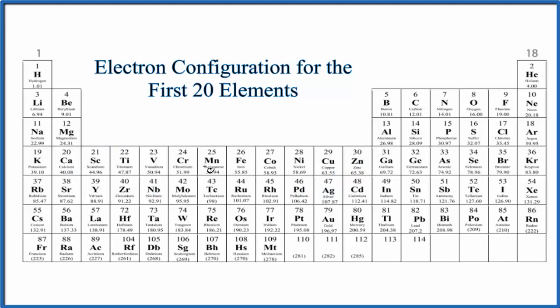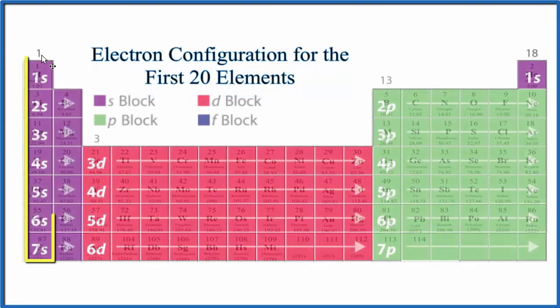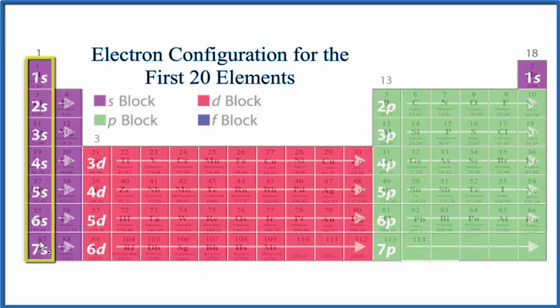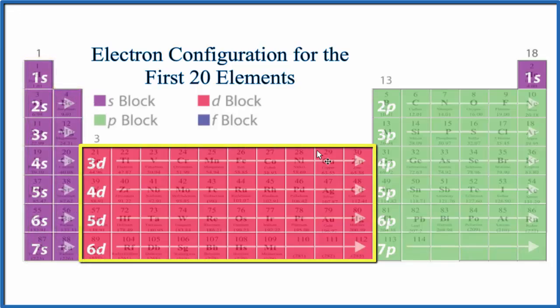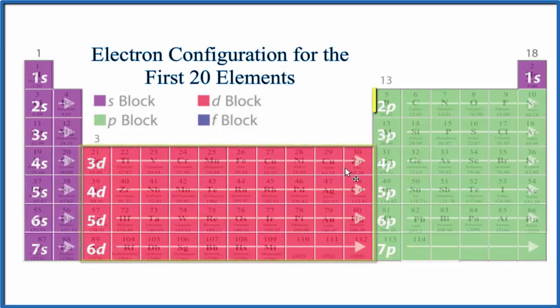So let's take a look at the orbital blocks on the periodic table. That's what's going to give us our pattern. Everything in group 1 ends in s1. Everything in group 2 ends in s2. Then we have our d block, d1 through 10, and we have p1, 2, 3, 4, 5, 6. Down here we'd have our f block, but we're not worried about that right now. So this is our pattern. To write the electron configuration for those first 20 elements, we're just going to follow through the pattern here.